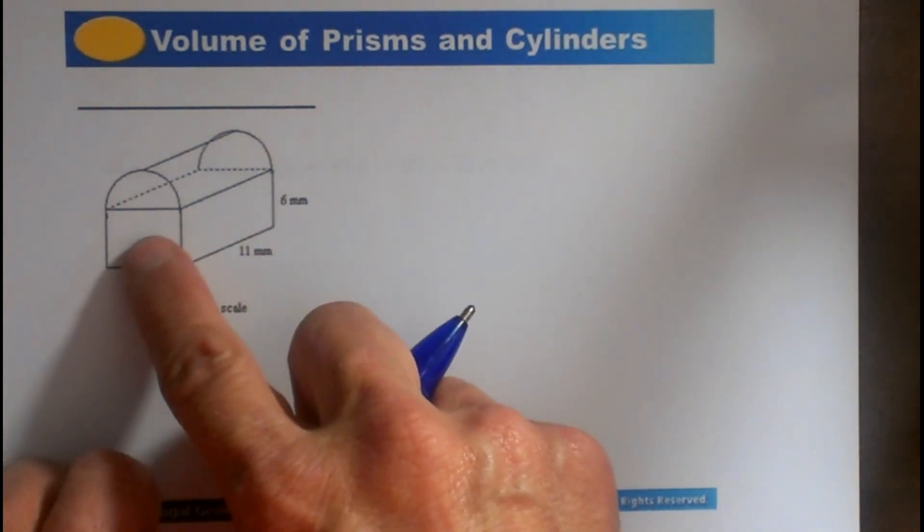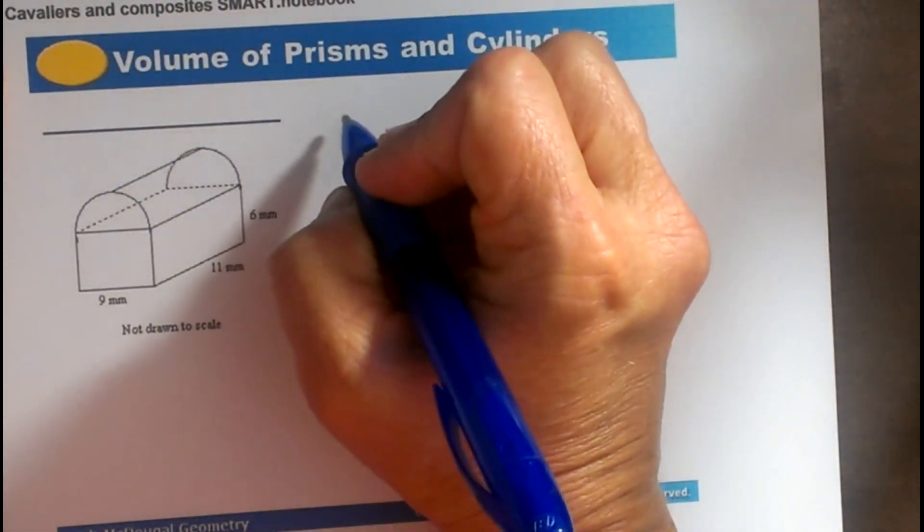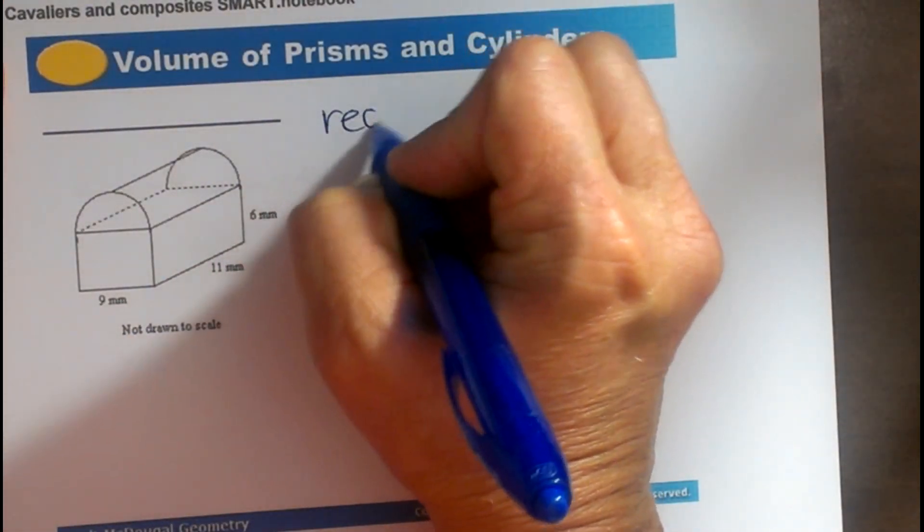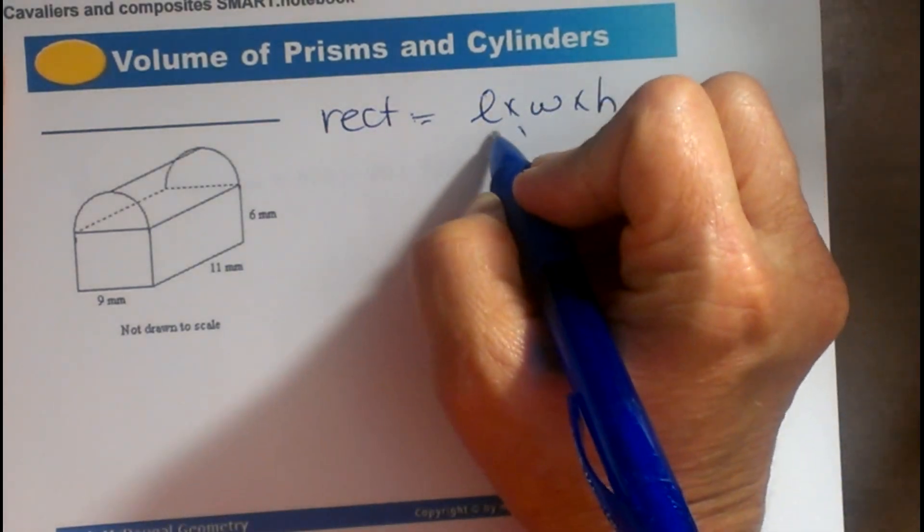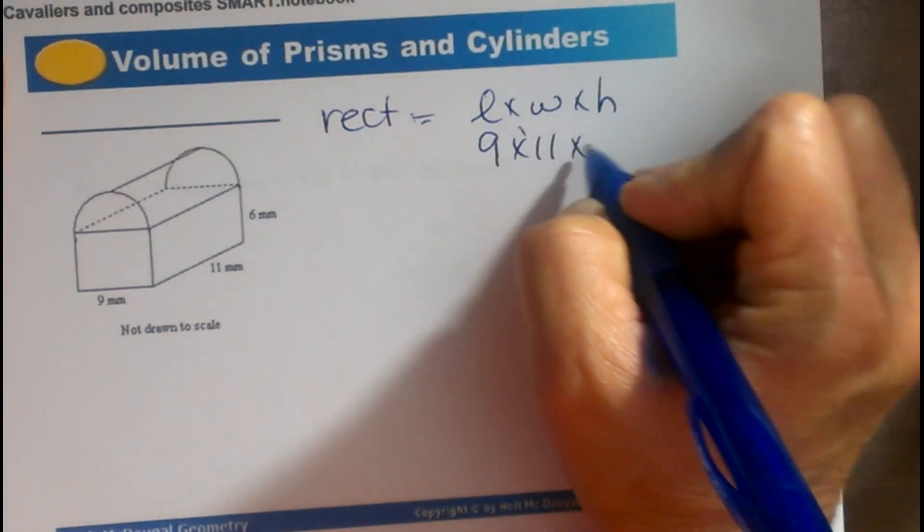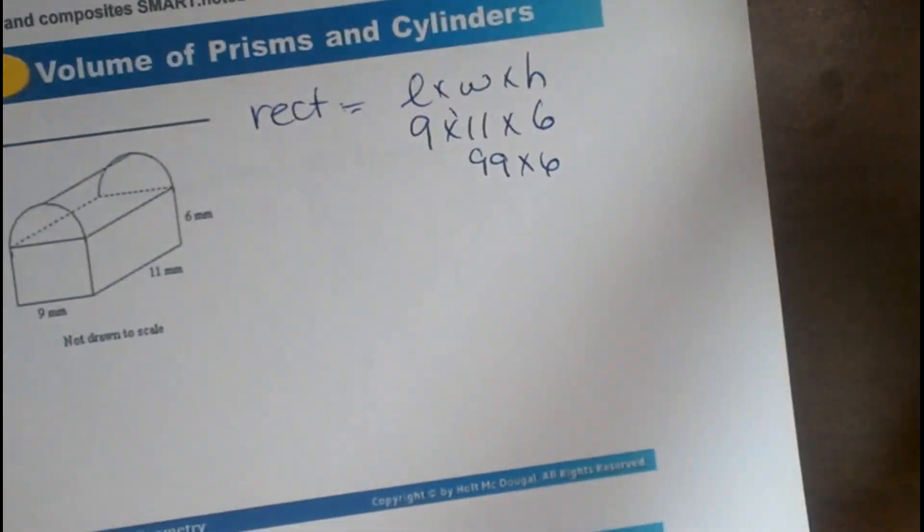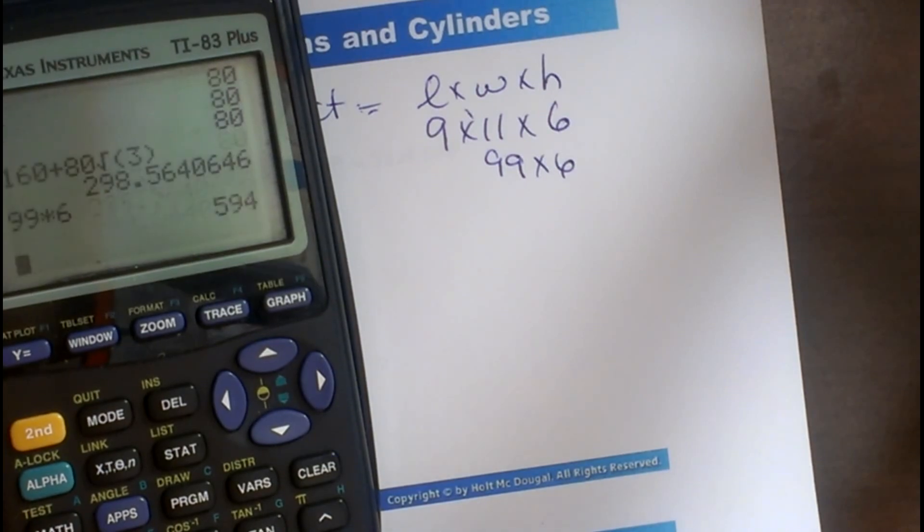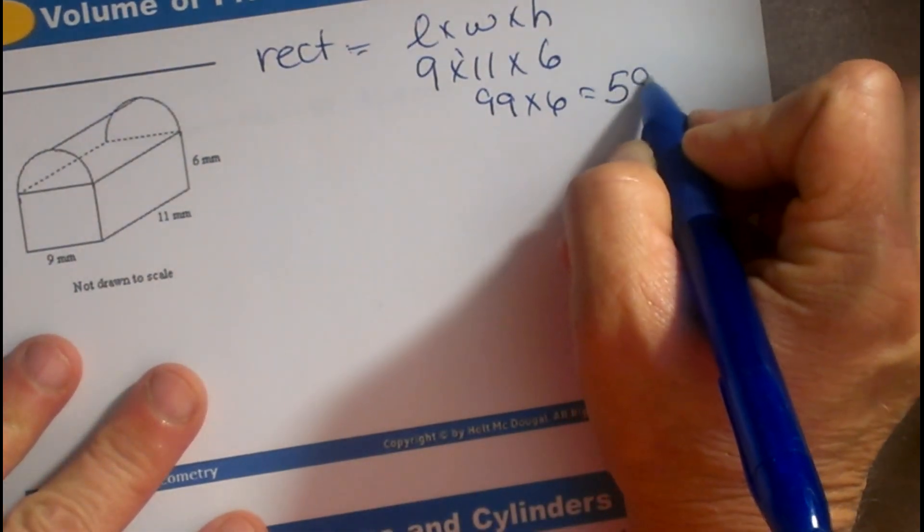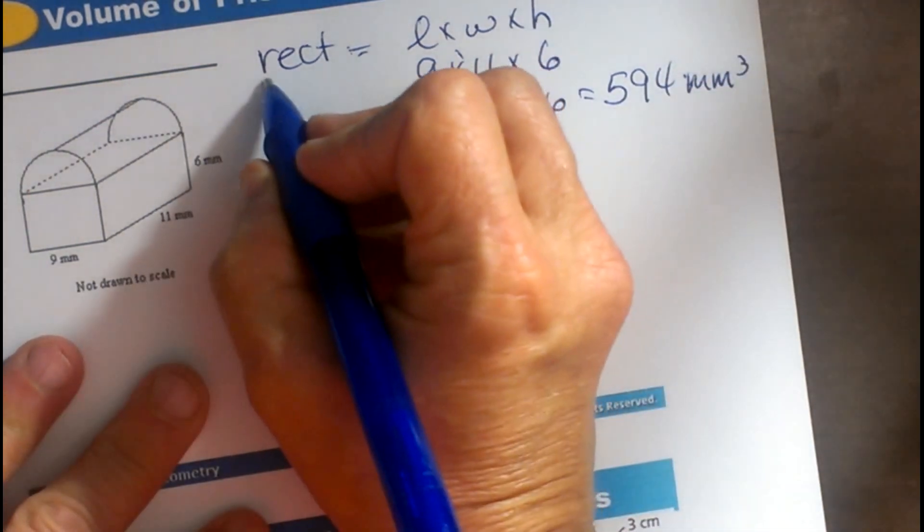So let's look at this rectangular prism, and then we're going to have to figure out that cylinder part. So the rectangular prism is going to be length times width times height, or 9 times 11 times 6. So 99 times 6 is 6 short of 600, right? 594 cubic millimeters.